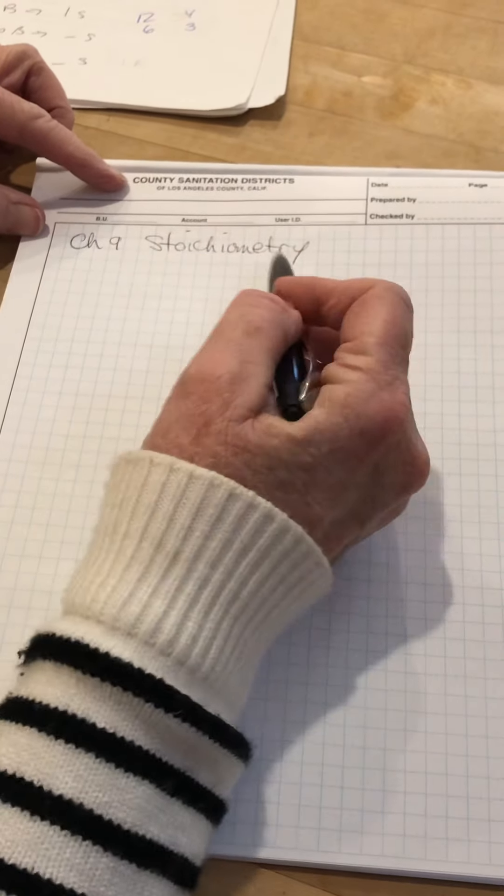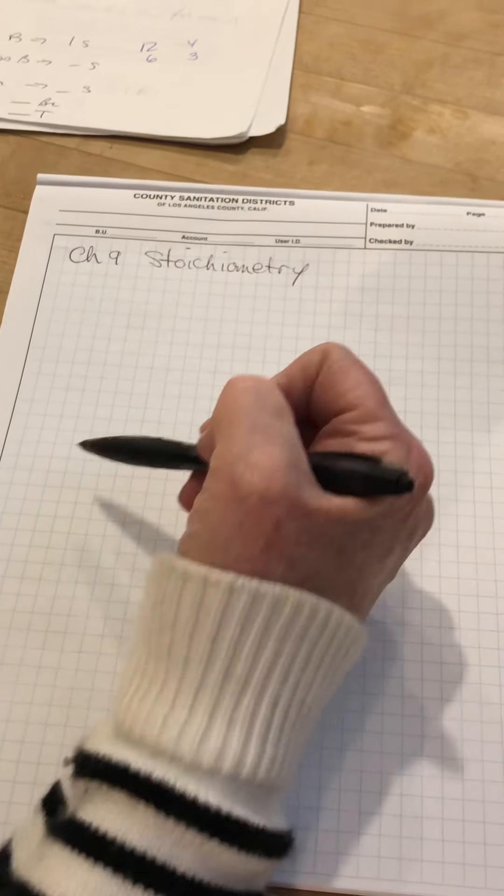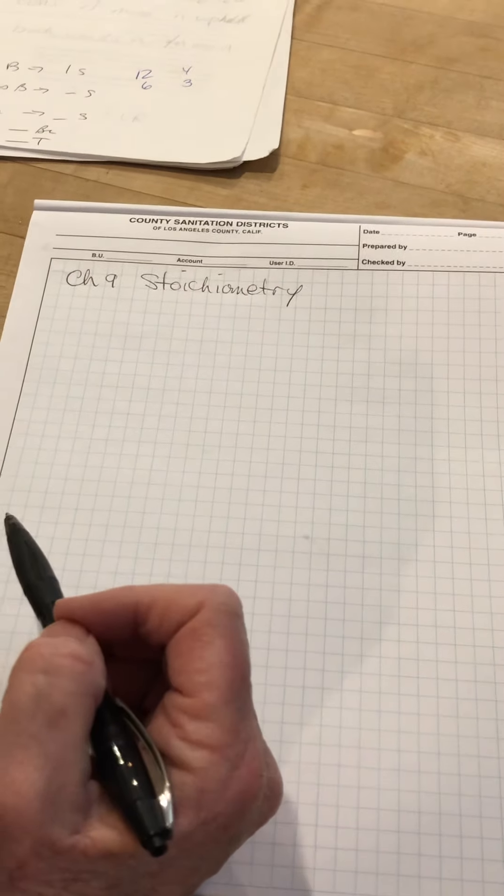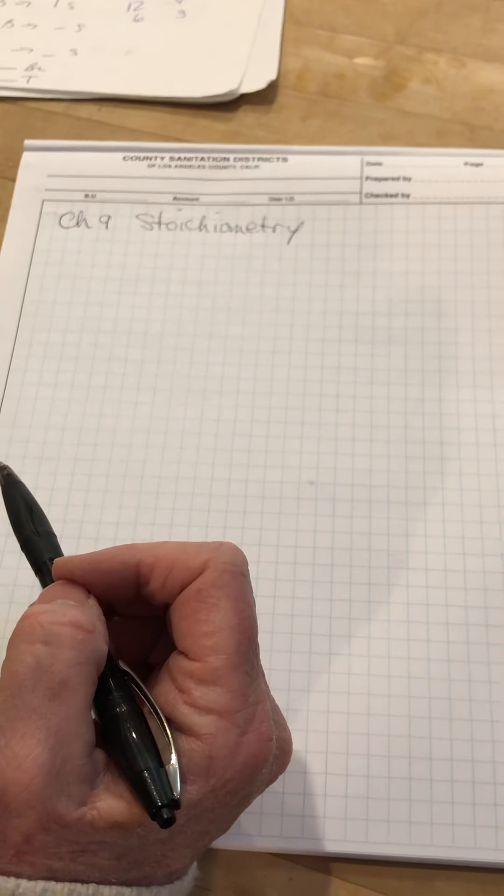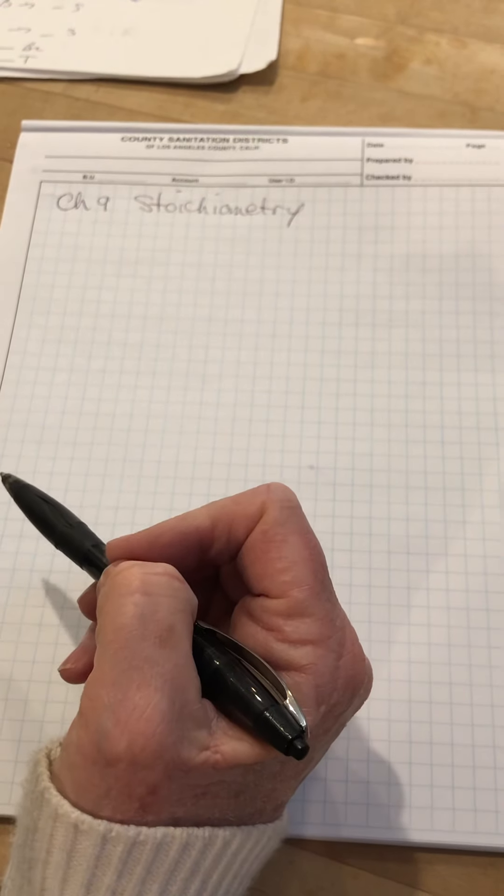Yep, that's right, Stoichiometry. Your book talks about two different types of Stoichiometry. They talk about compositional Stoichiometry and reaction Stoichiometry.